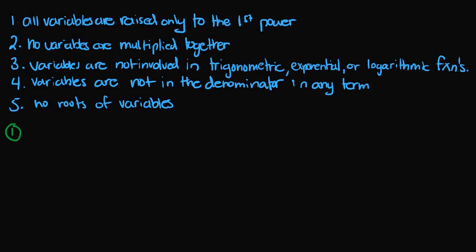I'll just do number one here. The first equation is 2x minus y is equal to 3. This equation is linear, and that's because all variables are raised only to the first power — we have x to the one and y to the one.